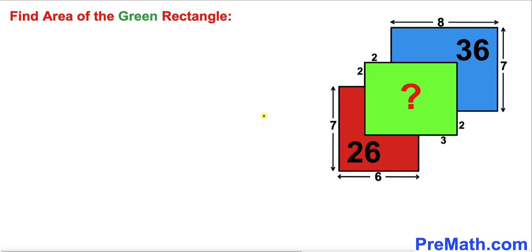Welcome to Pre-Math. In this video we have got three rectangles — blue, green, and red — as you can see in this diagram, along with their dimensions, such that the partial area of this blue rectangle is 36 square units and the partial area for this red rectangle is 26 square units. Now we are going to calculate the area of this green rectangle.